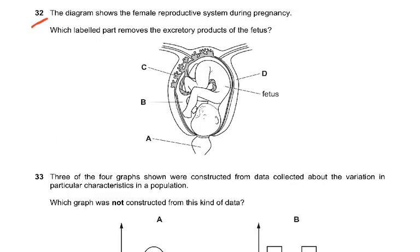Question 32: the diagram shows the female reproductive system during pregnancy. Which labelled part removes the excretory products of the fetus? The kidneys of the fetus are working and producing urea, which crosses from the fetal blood into the maternal blood in the placenta — nowhere else. The answer is C. The cells also produce carbon dioxide, which crosses the placenta into the maternal blood, and the mother's lungs exhale it. D was the uterus wall, B the amniotic fluid, and A the vagina — none of those are correct.